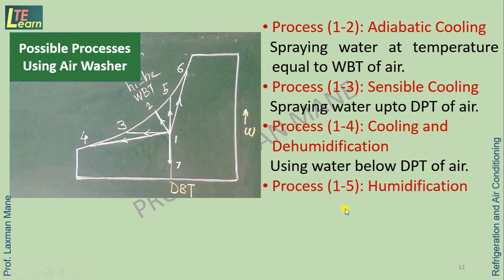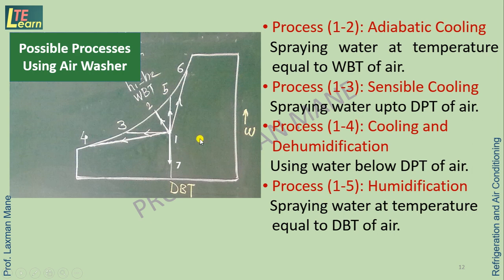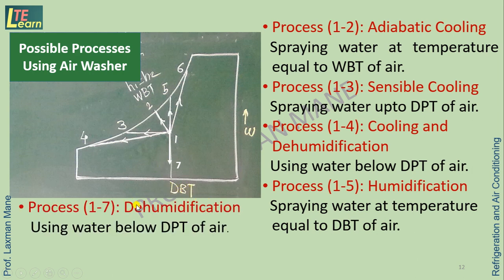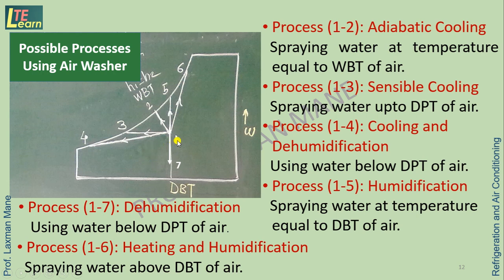Process 1 to 5 — humidification — is done by spraying water at a temperature equal to the dry bulb temperature of air. Process 1 to 6 — heating and humidification — is done by spraying water above the dry bulb temperature of air.